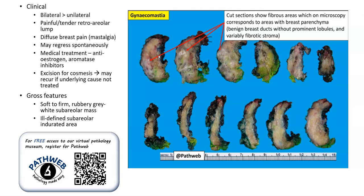Grossly, there is usually a soft to sometimes firm nodule or mass, and this lesion is usually subareolar in location. Sometimes it is rather ill-defined. Here is an example of serial sections taken from a more fresh case, and we can see that there are areas of whitish or collagenous stroma, mixed with yellowish fatty areas.